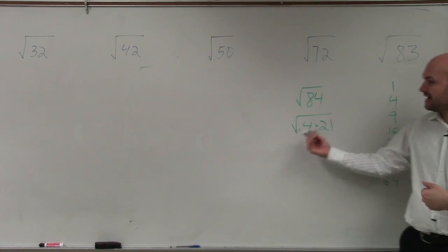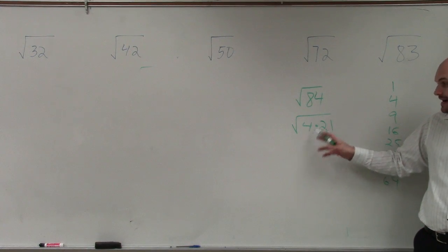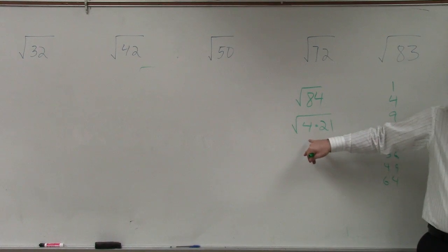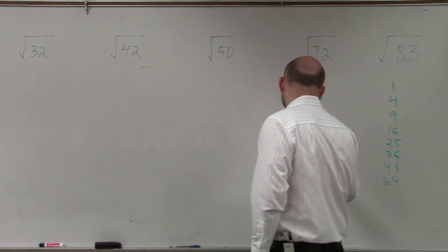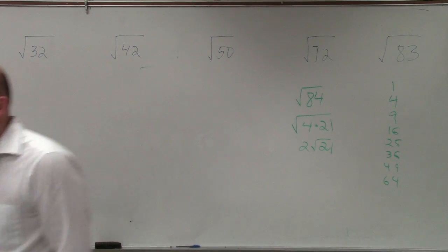So now, rather than writing it as a product of its primes, I just write it as a square number times another number. Why is that helpful? Because can I take the square root of square numbers? Yes. So square root of 4 is 2 times square root of 21. And that's done.